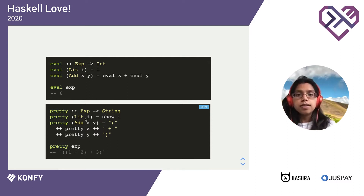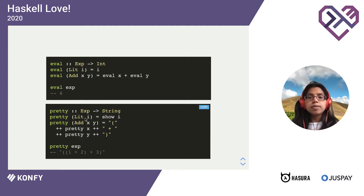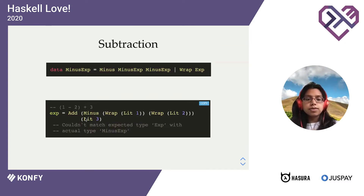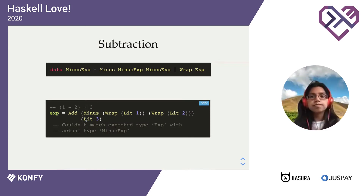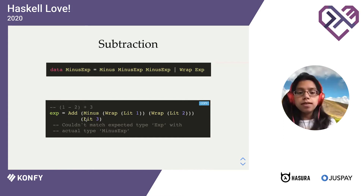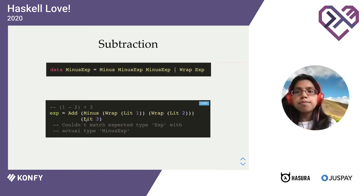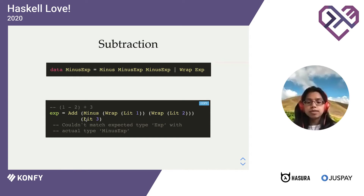And this encoding, where we encode using data types, is known as an initial encoding. It seems like a good solution, and it's very simple as one, but it does have some problems when it comes to extension. Let's say we want to extend this data type to support subtracting resources — we add a minus. We might try just wrapping our initial expression in another data type, a MinusExp, and adding another clause. But we find that this doesn't work. We can't embed the minus type within the previous expression because it's recursive.